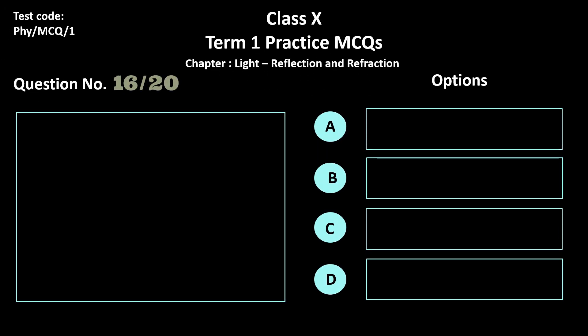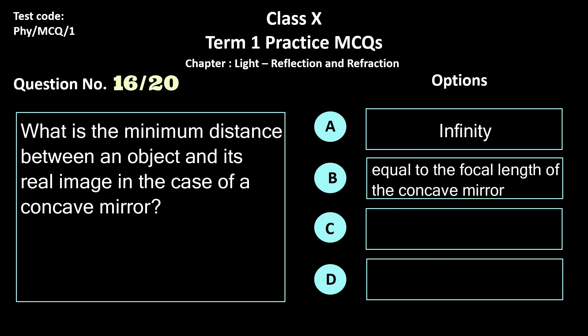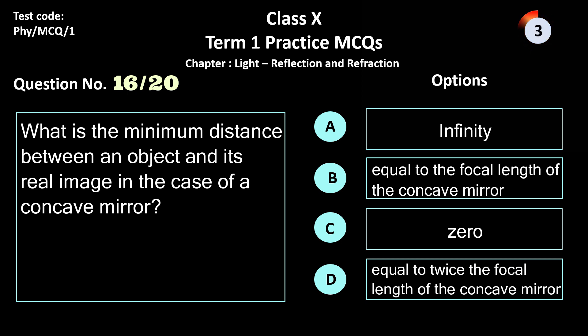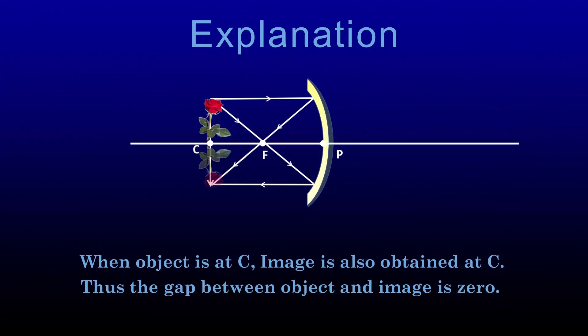Question 16. What is the minimum distance between an object and its real image in the case of a concave mirror? Options: a) infinity, b) equal to the focal length, c) 0, and d) equal to twice the focal length. The correct answer is option c, 0. When the object is at the center of curvature, the image is also obtained at the same position, so the distance between the object and its image is 0.